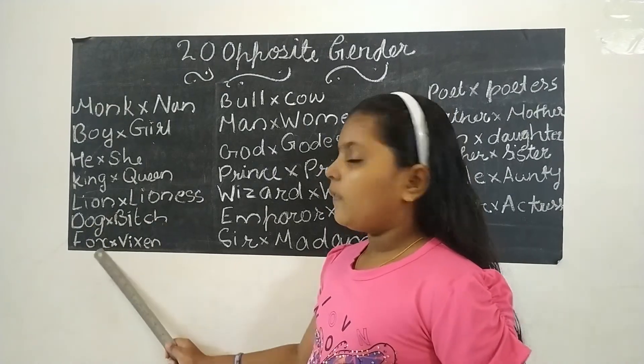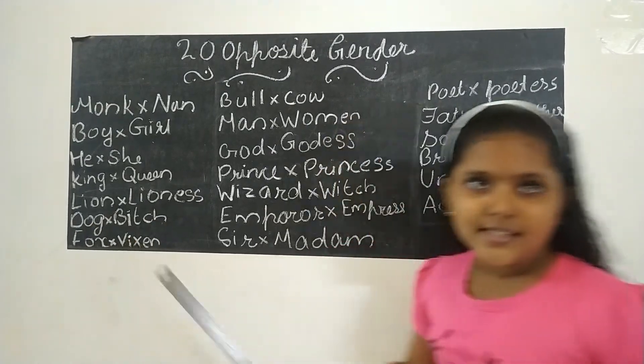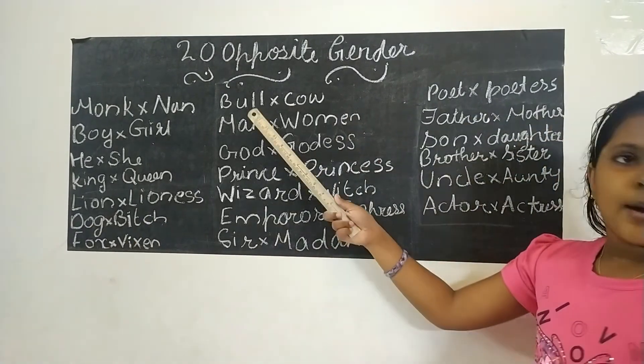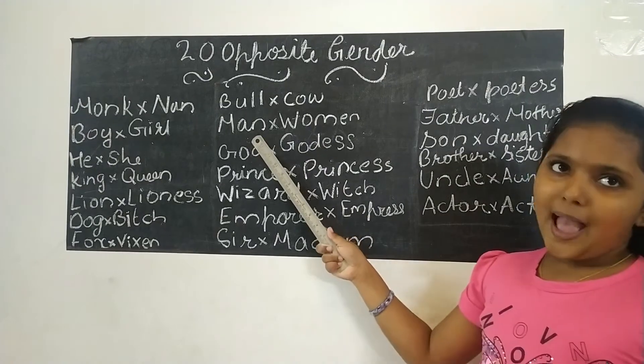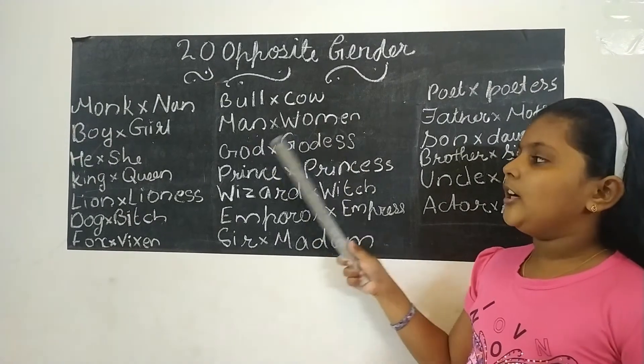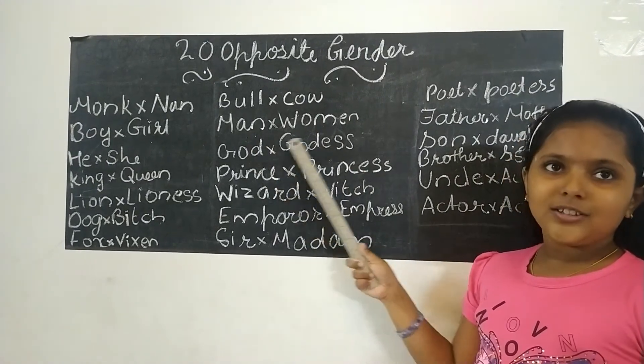Dog, bitch. Fox, vixen. Bull, cow. Man, woman. God, goddess.